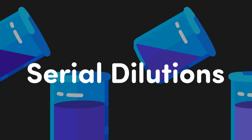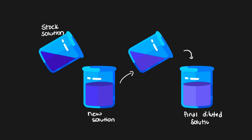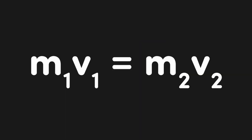In this video, we are going to discuss what serial dilutions are and how to solve serial dilution problems. A serial dilution is exactly what it sounds like — a series of dilutions. For example, an initial stock solution might be diluted down, then that diluted sample would be further diluted in a second step. Serial dilution problems are like any other dilution problem, and the equation m1v1 equals m2v2 applies, except we have to think about a series of dilutions rather than just one.